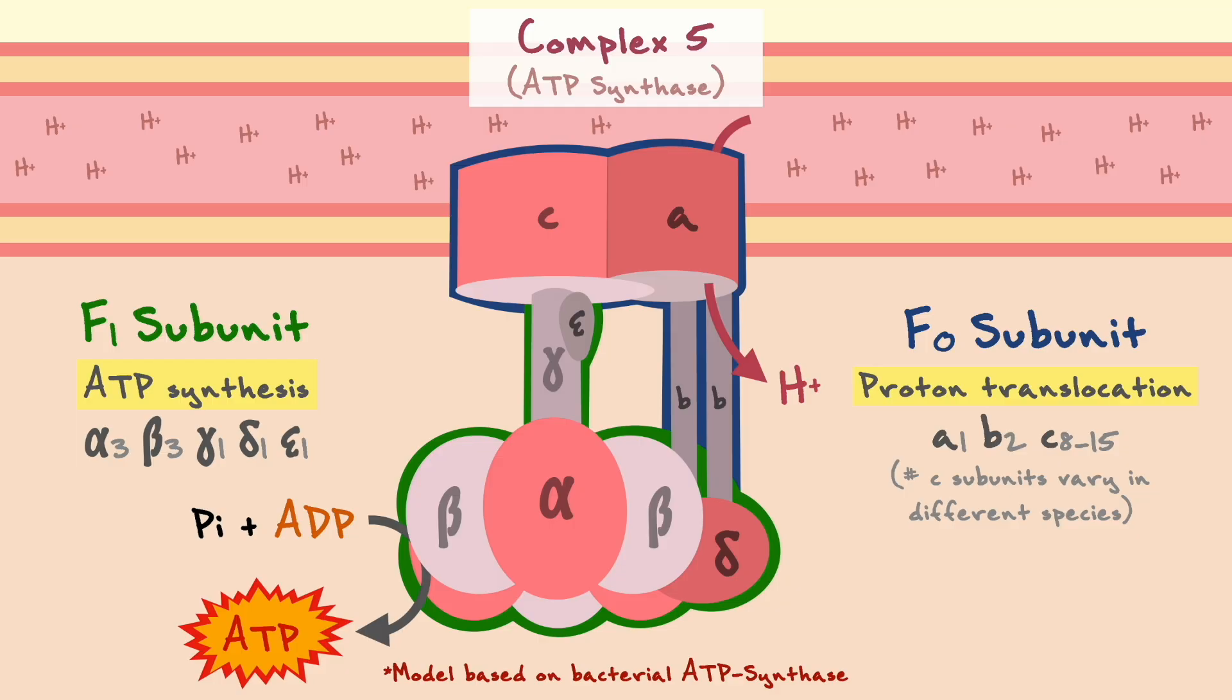The gist of how this protein works is that the energy produced by the flow of protons from the intermembrane space to the matrix will release energy that will fuel ATP synthesis, which on the protein happens in the beta subunits.